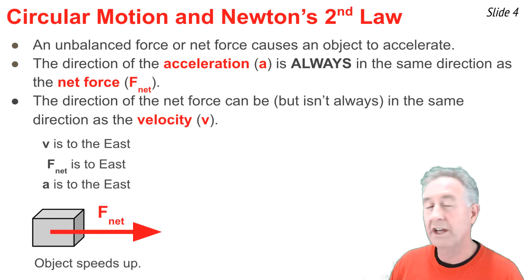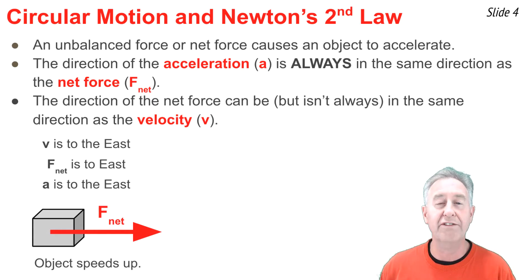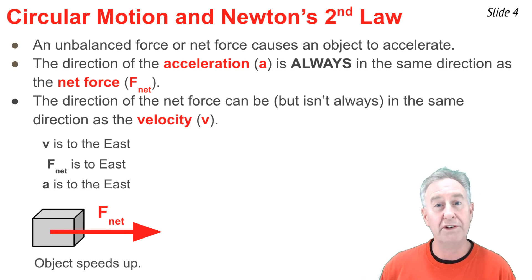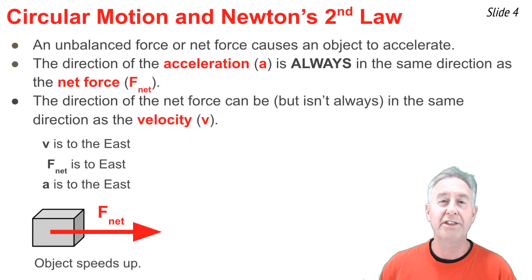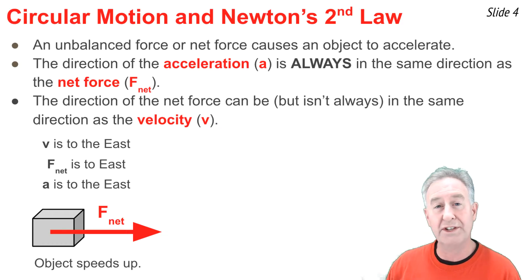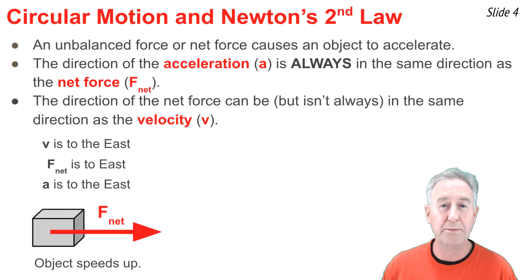Let's consider three situations. In the first, the object is moving eastward — that's the direction of the velocity vector — and the net force is also directed eastward, so the acceleration is eastward. In this case, with the force in the same direction as the motion, the object would speed up.